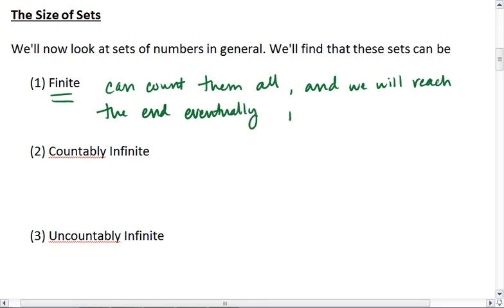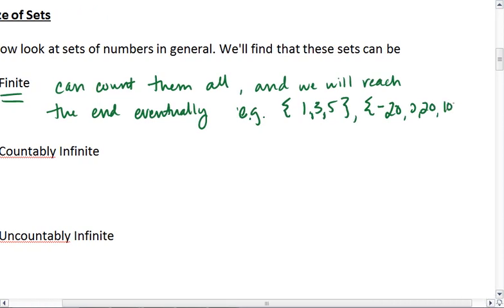And we will reach the end eventually. So as I just showed you, the set 1, 3, 5 is considered finite. So is the set negative 20, 0, 20, 100, 140. If there's an end, if we will eventually be able to count every number, it's finite.